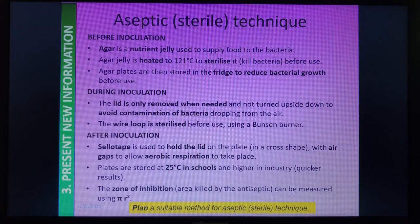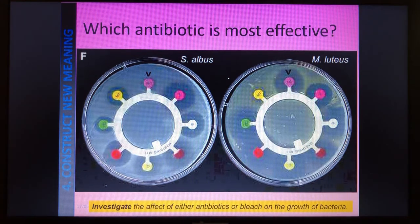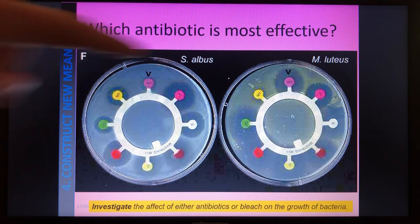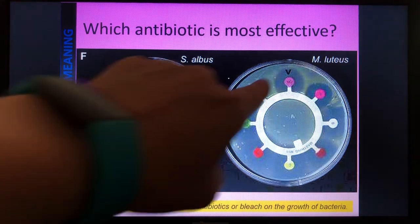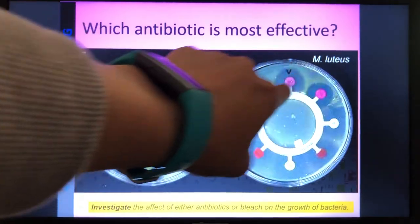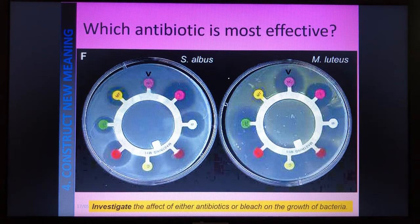Taking two points from each section gives a nice six-mark answer. It's good to give reasons why we do things, not just what we do. To find the most effective antibiotic, we look for the largest zone of inhibition. We measure the diameter first because it's hard to find the exact middle, then halve it to get the radius, and use pi r squared. If a zone isn't quite circular, we work out an average diameter, take it to the radius, and go from there.